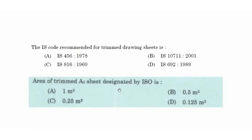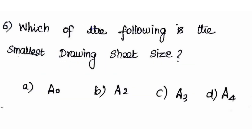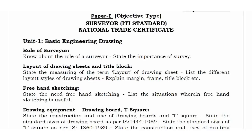The area of the trimmed A0 sheet is 1 m². The A1 sheet is 0.5 m², the A2 sheet is 0.25 m², and the A3 sheet is 0.125 m². This concludes the layout of drawing sheets and title blocks. You can download the codebook for additional reference. In the next class, we will cover free-hand sketching. Thank you.